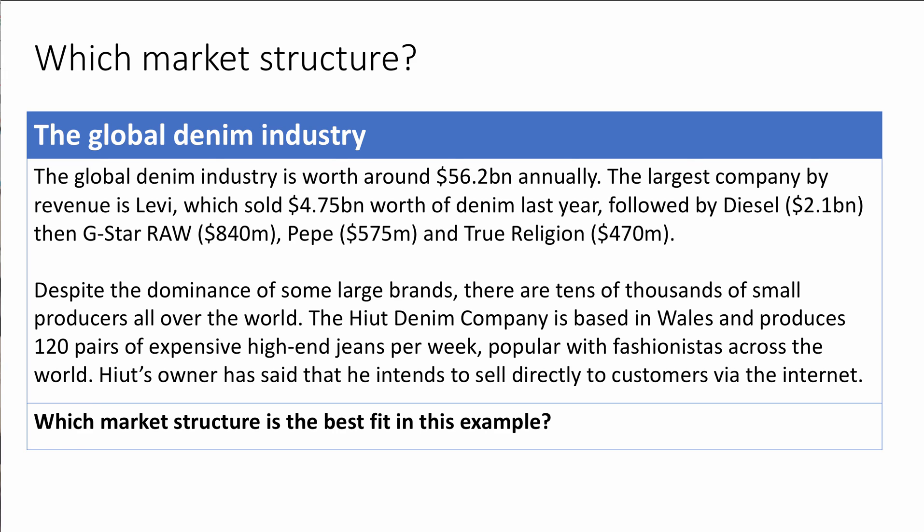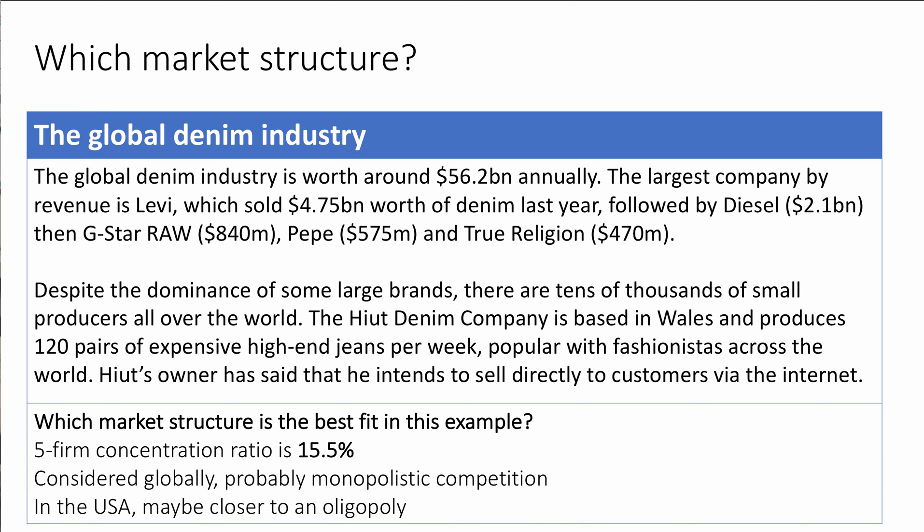The global denim industry is worth over $55 billion a year. The biggest companies — Levi's, Diesel, G-Star Raw, Pepe, True Religion — take about 15% of the market. There are tens of thousands of small producers worldwide, including a producer in Wales making just 120 pairs of high-end customized jeans per week. The five-firm concentration ratio is just 15.5%, so globally it's not an oligopoly — probably monopolistic competition — though in the United States it is probably much closer to oligopoly. Market concentration depends on how you define the market.